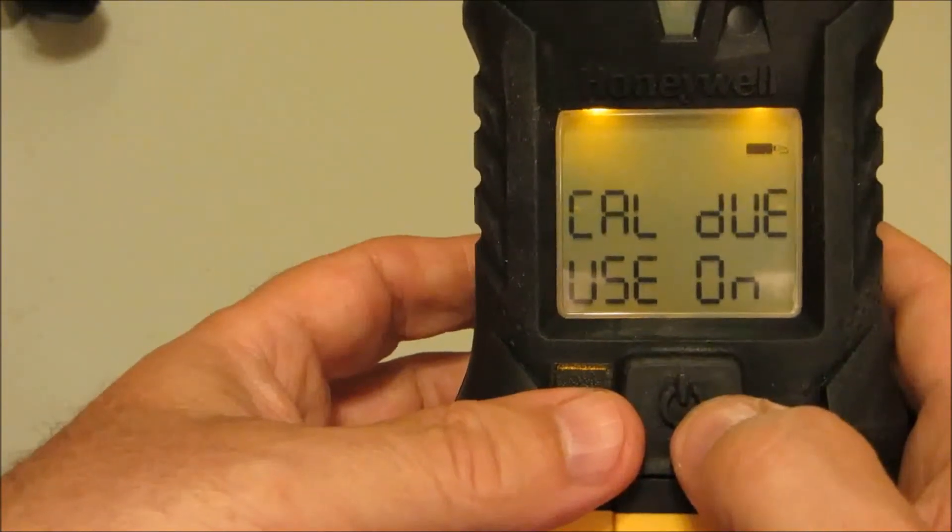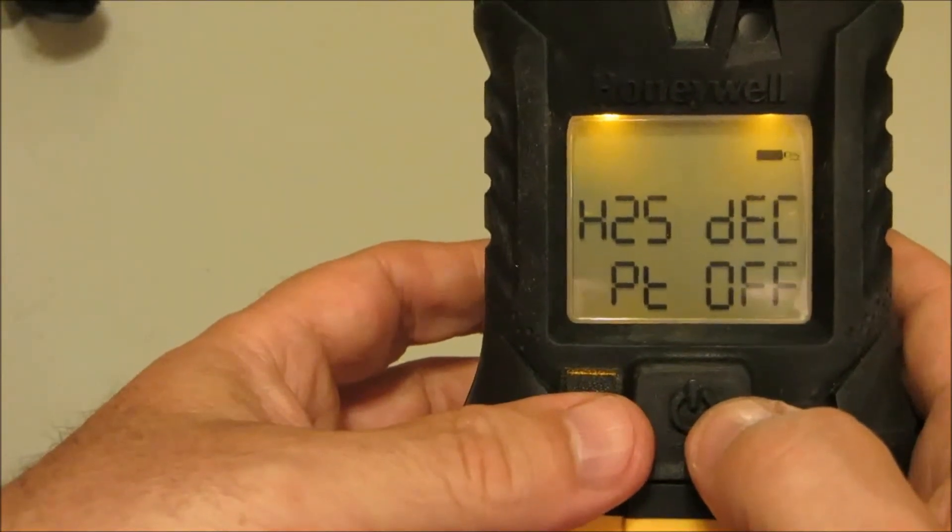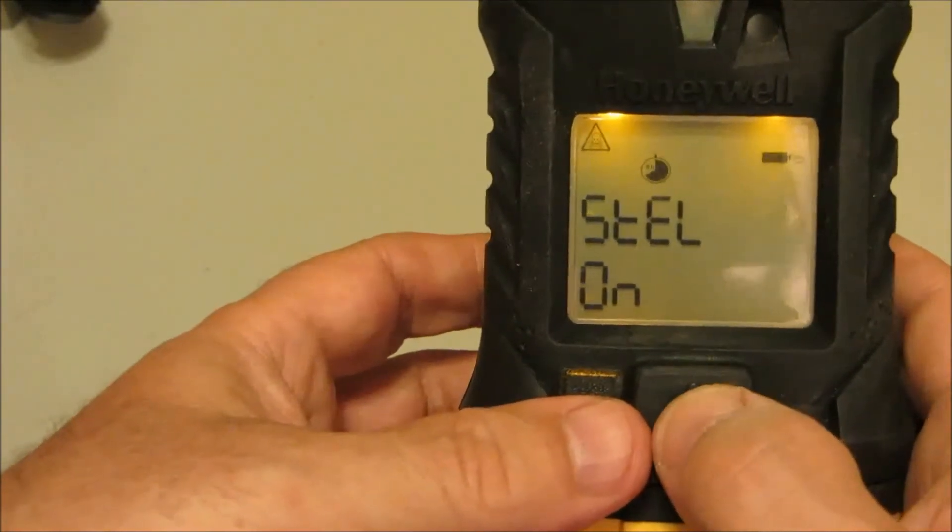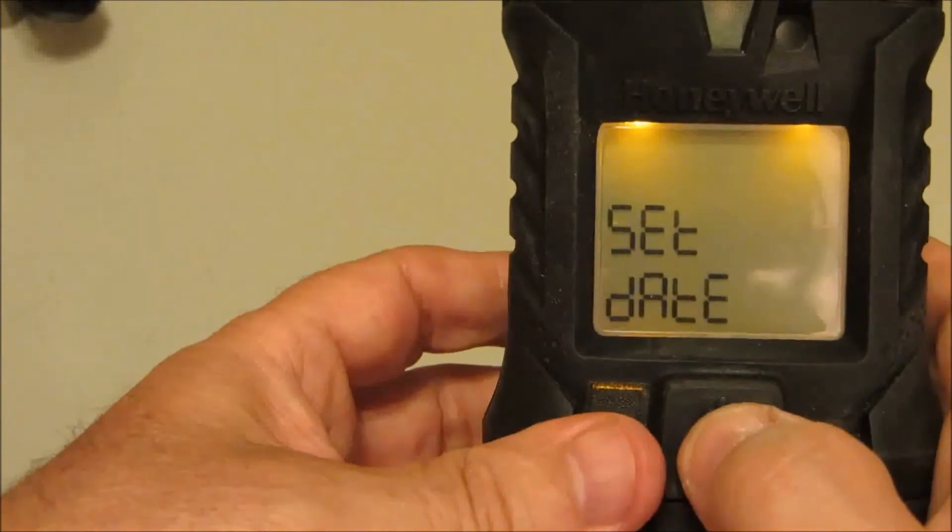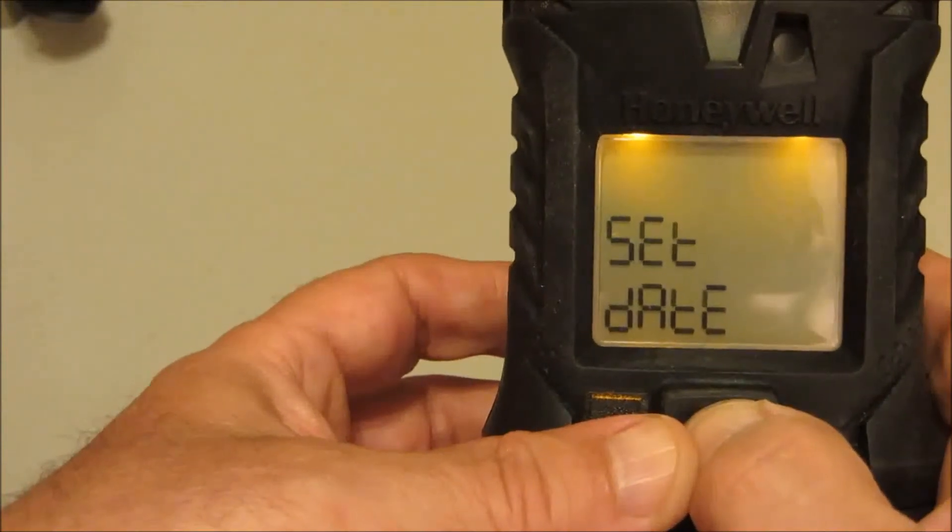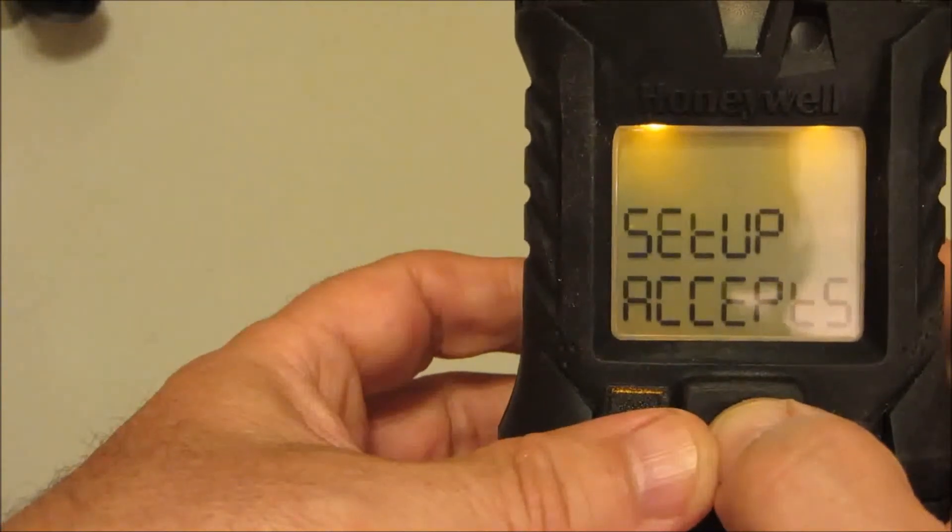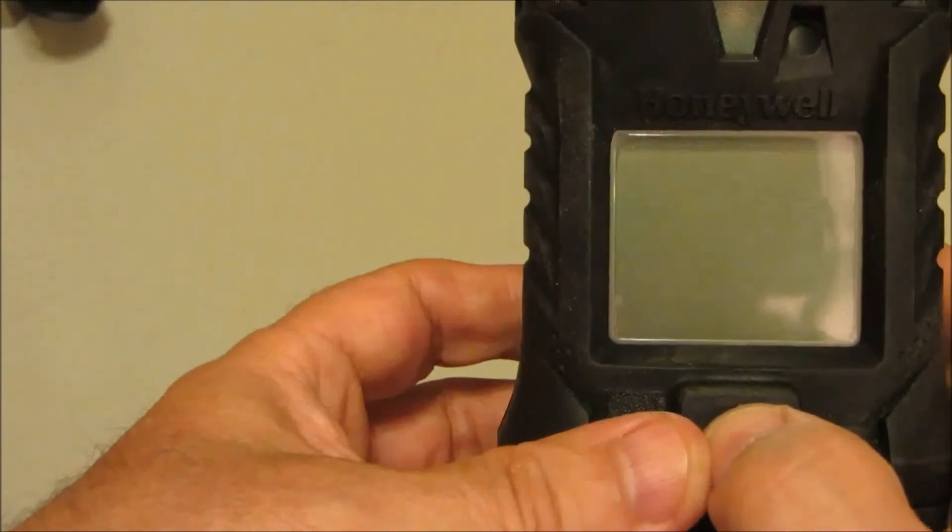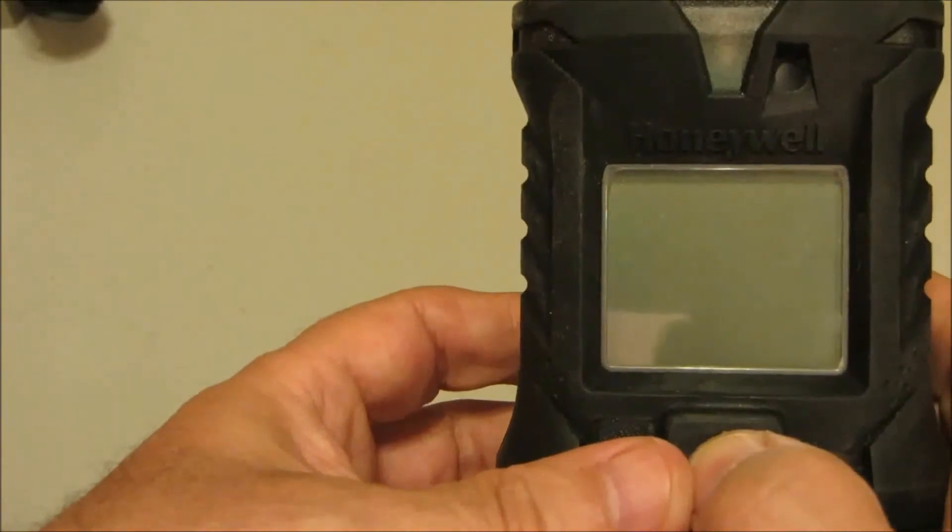Cal do. You can add the decimal point to the H2S reading. You can ask if you want to accept. Countdown. And just press accept before the unit counts down to zero. The unit will shut down. And that's configuring the monitor manually.